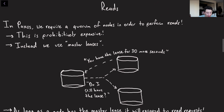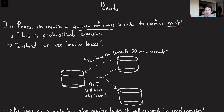Let's talk about reads. In the actual Paxos algorithm, you require a quorum of nodes to perform a read — it's not good enough to just read from the master. That said, this is more expensive than we'd like. For a read, we can just read from the master because the master is effectively the source of truth in Paxos. However, the master is not perfect — if a master goes down, we don't want to keep sending it read requests, and that's why we have master leases.